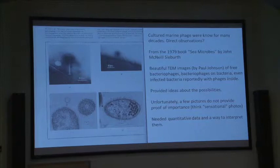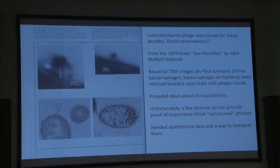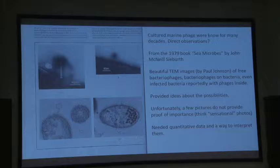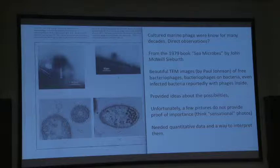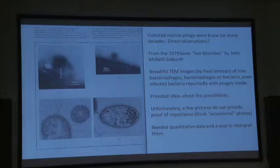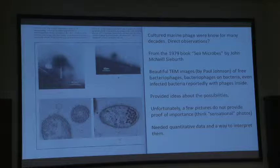Viruses were known to happen in marine systems. There had been a lot of work on cultured marine viruses going back early in the 1900s. But direct observations of viruses in nature were very few — where they were and how abundant they were. John Sieburth had a beautiful set of pictures in a book published in 1979 that included nice pictures of viruses found in seawater and even what he reported as a cell infected with viruses. However, a few pictures are not proof of importance — just as pictures of people being eaten by sharks doesn't prove that's a major source of human mortality. You really need quantitative data and a way to interpret it.